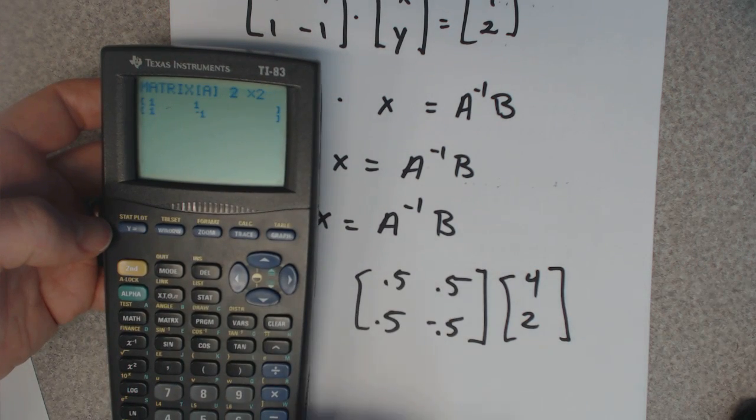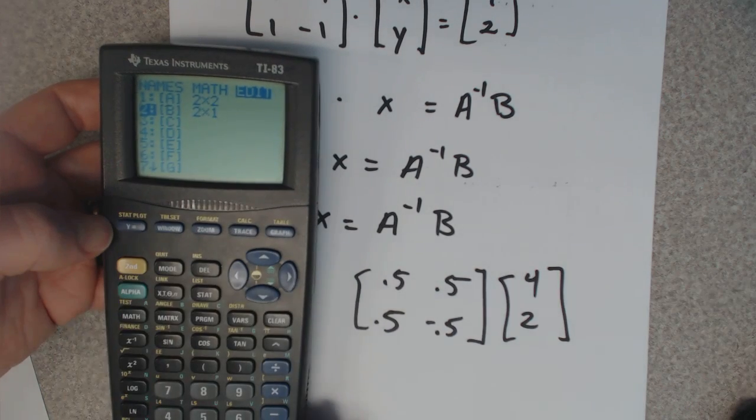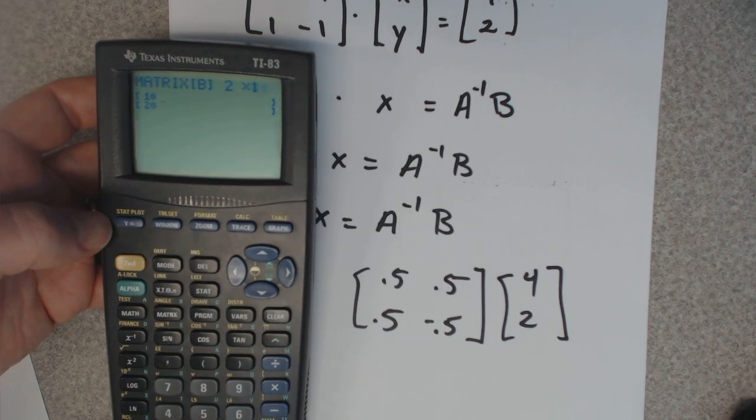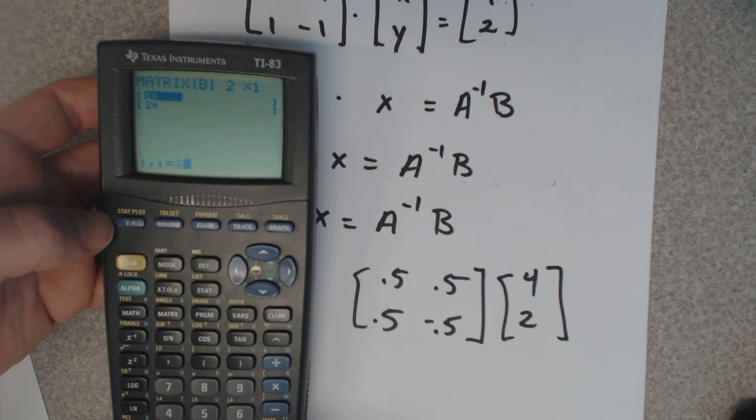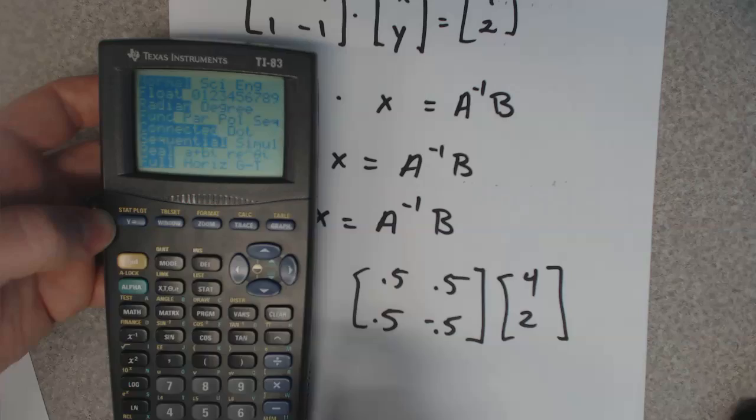Go to edit, matrix B. It's a 2 by 1. Put in a 4 and a 2. Quit to the main screen.